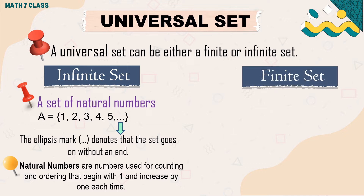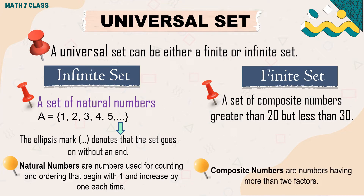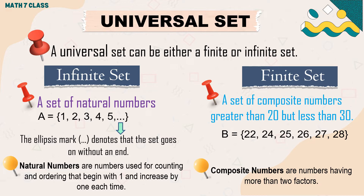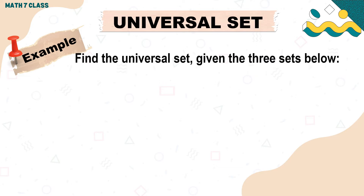This is an example of a finite set: a set of composite numbers greater than 20 but less than 30. Composite numbers are numbers having more than two factors. If set B is a set of composite numbers greater than 20 but less than 30, then the elements of set B are 21, 22, 24, 25, 26, 27, and 28.